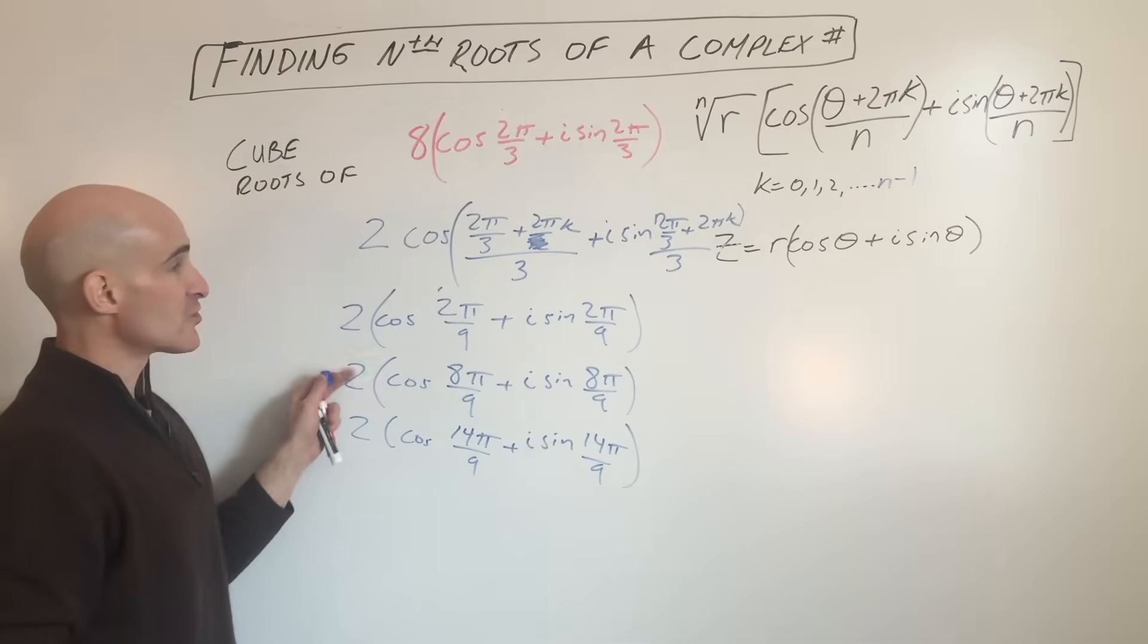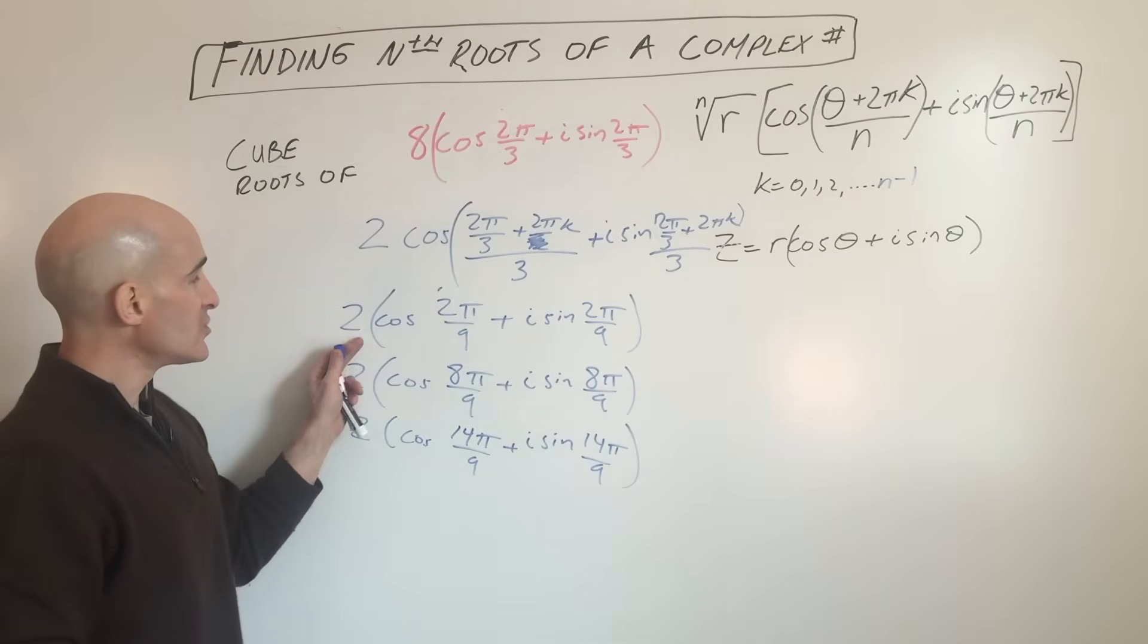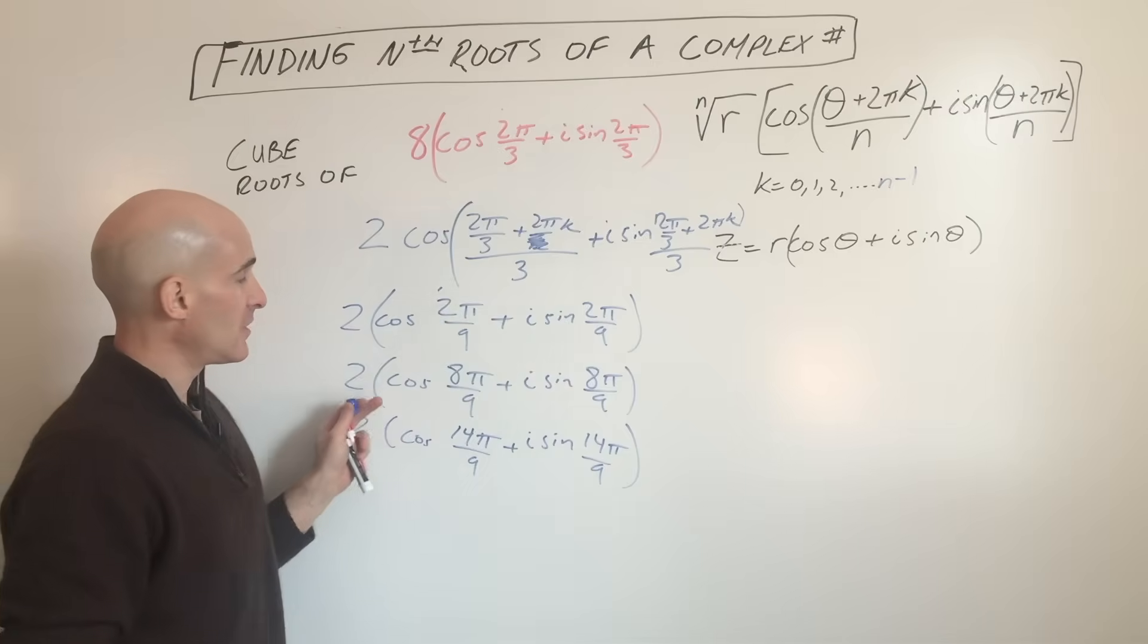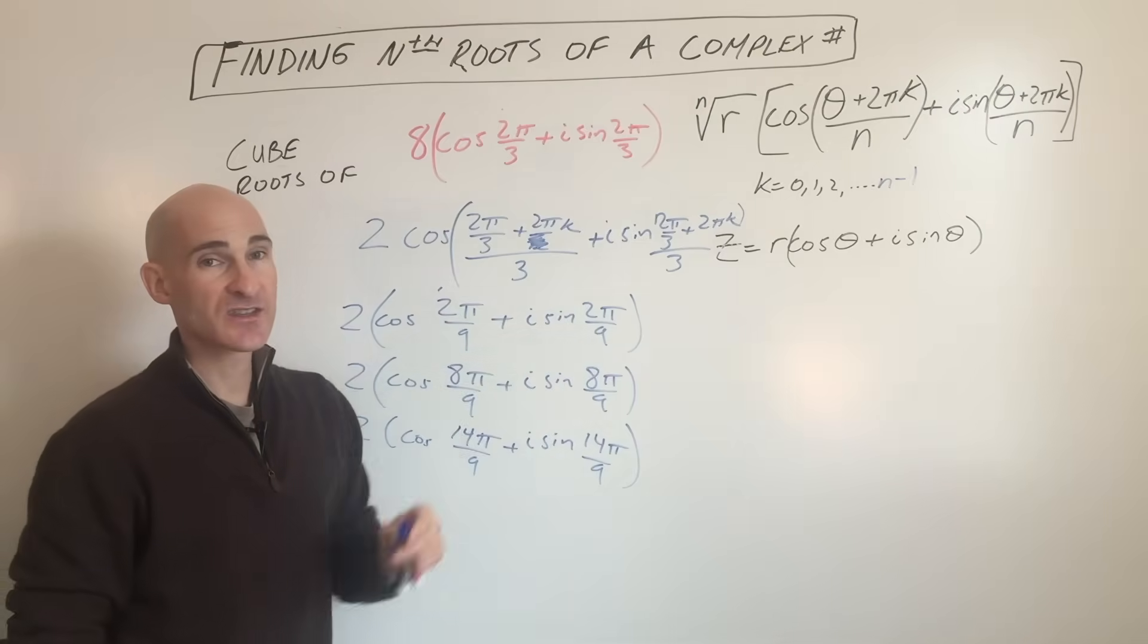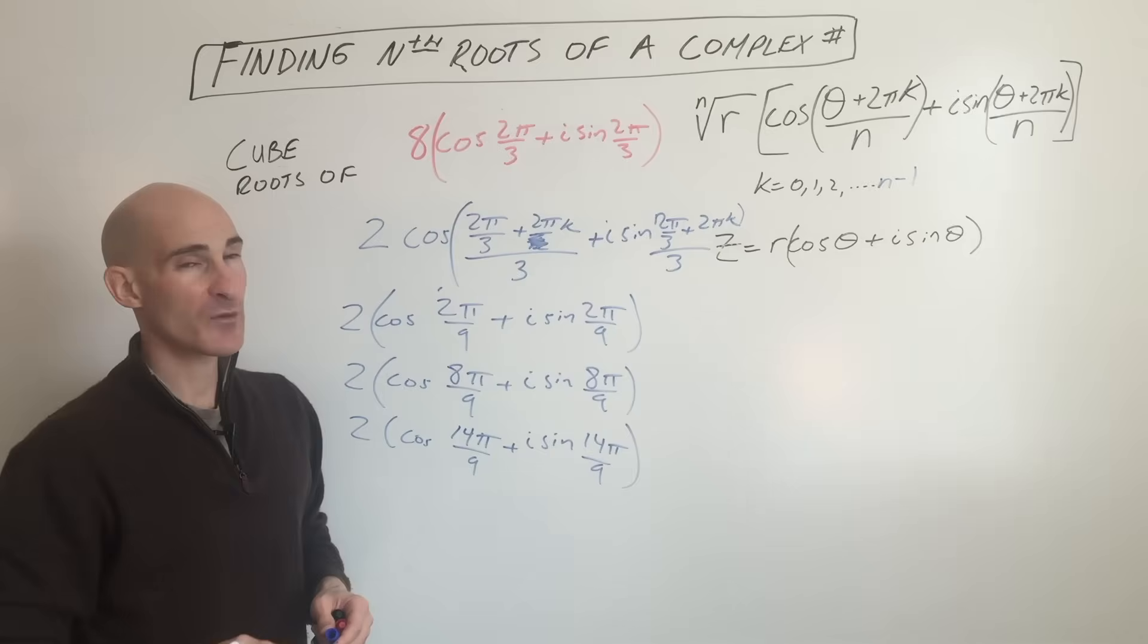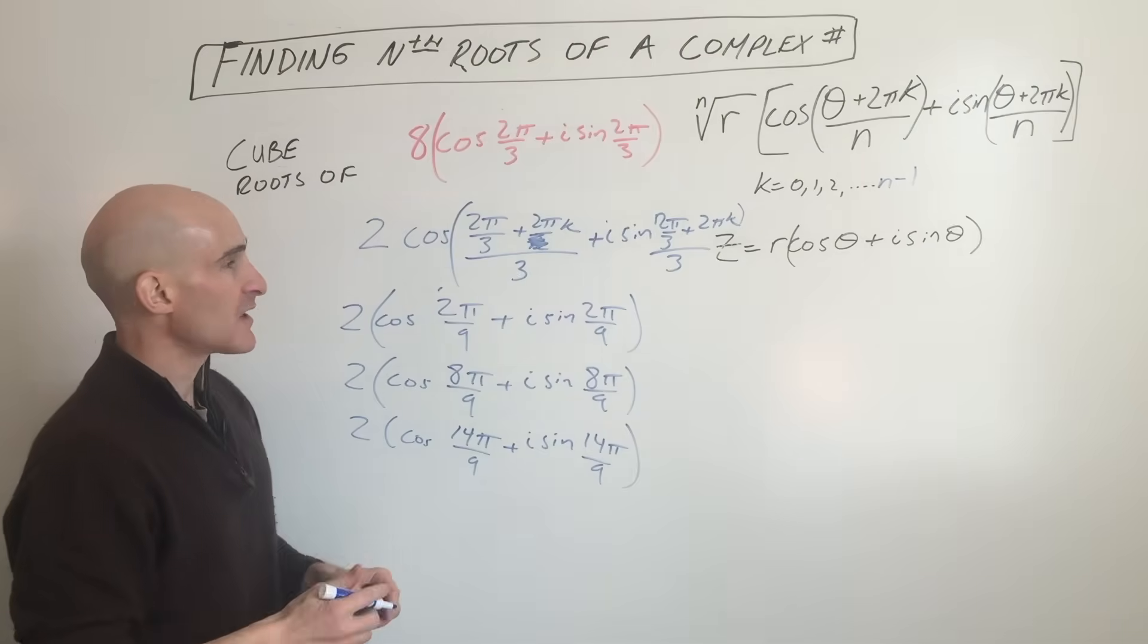And that's it. So those are your three solutions. And what you can do is you can distribute the two, and you can translate this back into the standard form, the a plus bi form of a complex number.